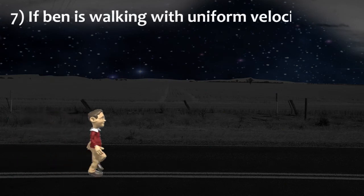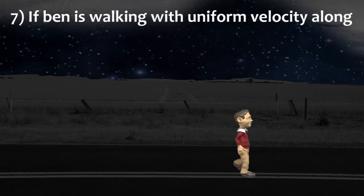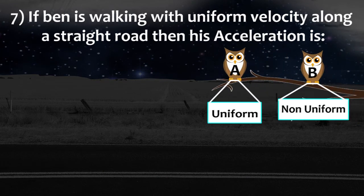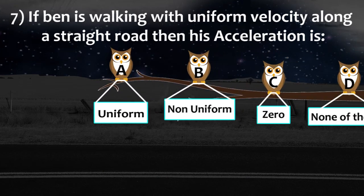If Ben is walking with uniform velocity along a straight road, then his acceleration is: Uniform, Non-uniform, Zero, None of the above.